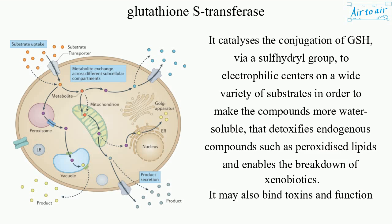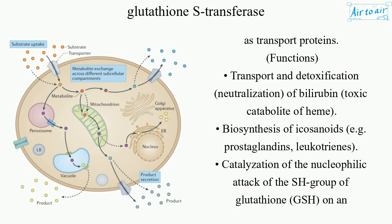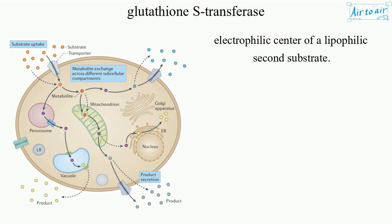It may also bind toxins and function as transport proteins. Functions — transport and detoxification: neutralization of bilirubin, a toxic catabolite of heme; biosynthesis of eicosanoids, e.g. prostaglandins and leukotrienes; catalyzation of the nucleophilic attack of the SH group of glutathione, GSH, on an electrophilic center of a lipophilic second substrate.